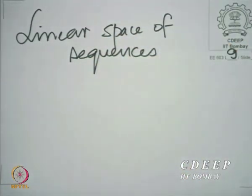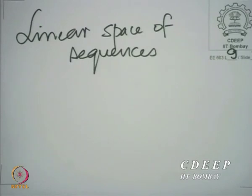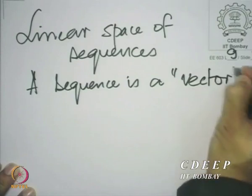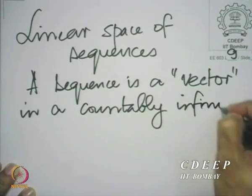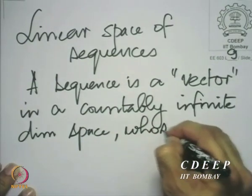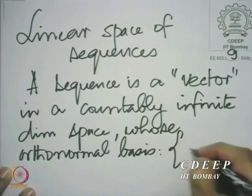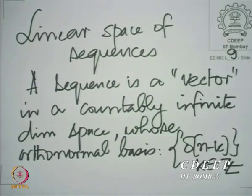Any sequence is really like a vector in an infinite dimensional space, and the infinity of that dimension is the infinity of the integers. You can think of each sample of the sequence as a coordinate of that vector. So a sequence is like a vector in a countably infinite dimensional space whose orthonormal basis is essentially the set of all unit impulse sequences. Put a unit impulse at every integer location and each of these gives you a separate perpendicular vector.